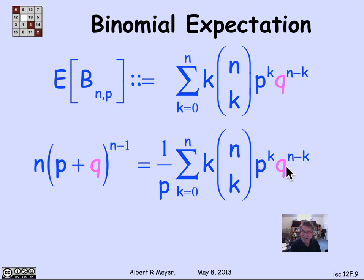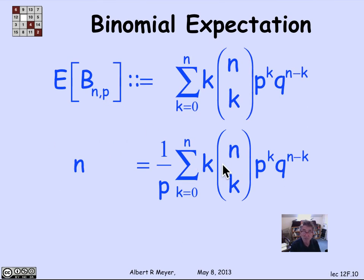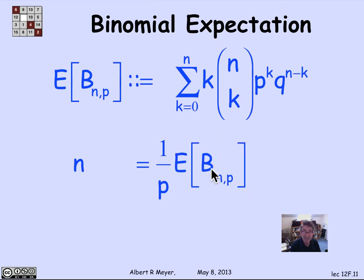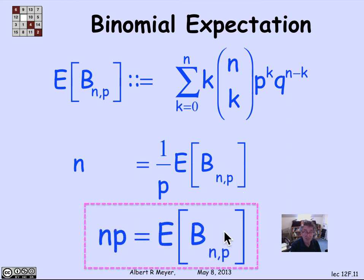And this right hand side now is exactly the expectation of B_{n,p}, this part of it anyway. So what I'm going to wind up with is that n is equal to 1 over p times the expectation of B_{n,p}. In other words, the expectation of B_{n,p} is n times p. And that is the basic formula that we were deriving by first principles without using any general properties of expectation, just the definition of expectation and the stuff that we had already worked out in terms of the binomial theorem.